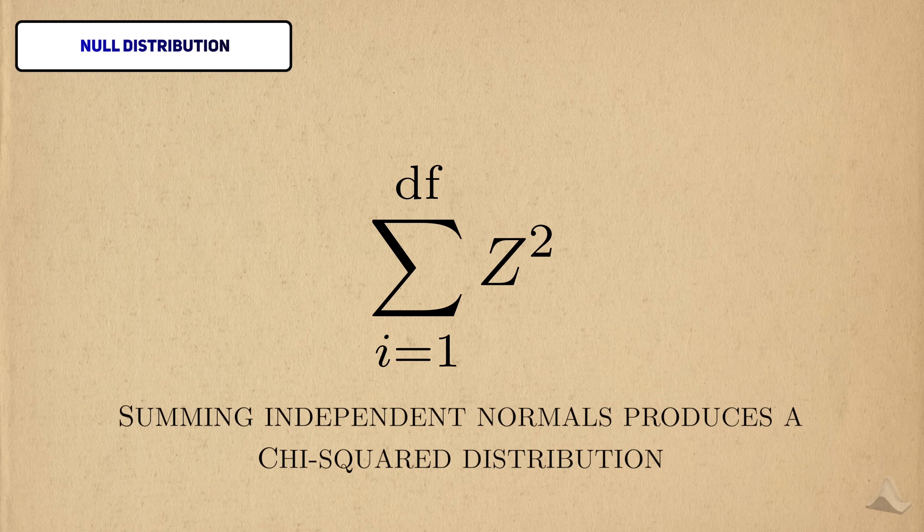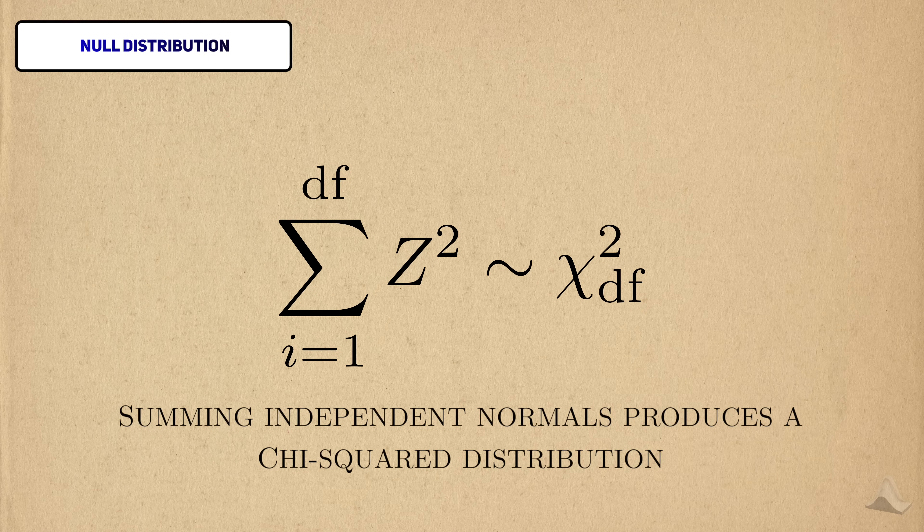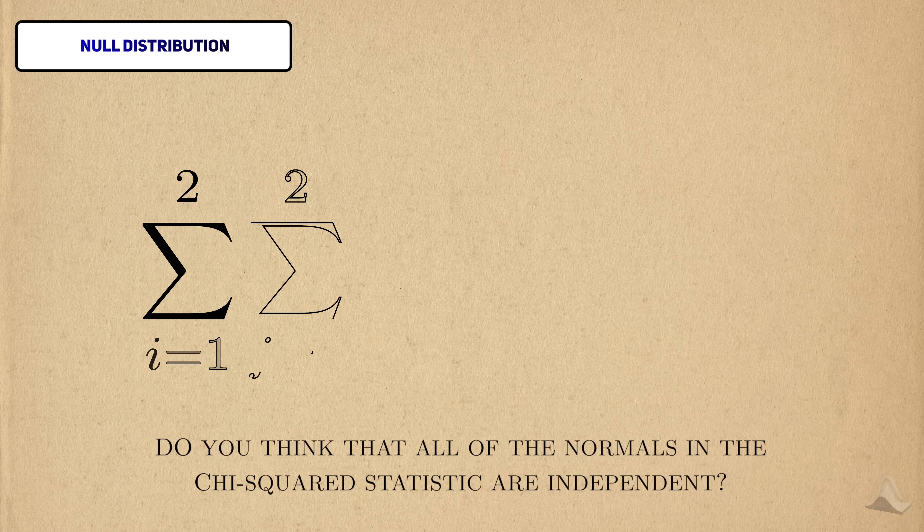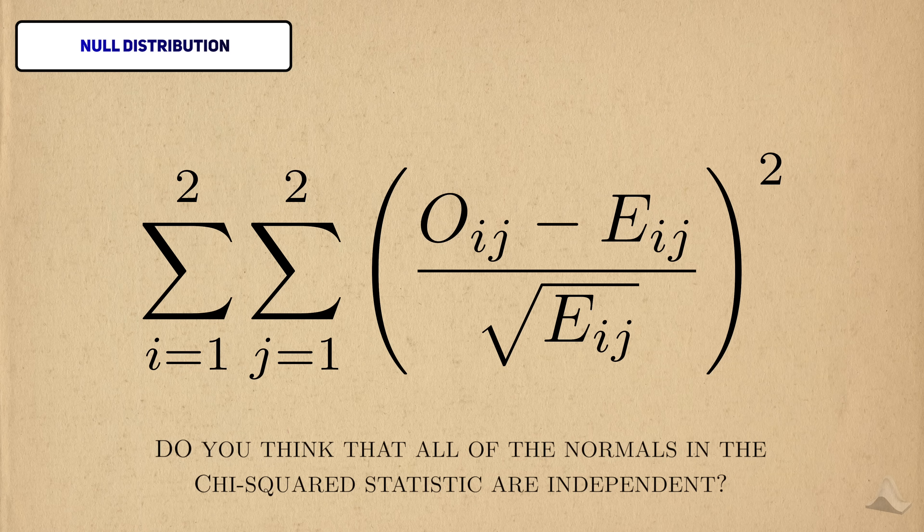When we sum multiple independent standard normals together, we still get a chi-squared distribution, but the degrees of freedom is related to the number of normals that we sum up. This independence matters a lot, especially since the data comes from a contingency table. Would you think that all of the standard normals from the chi-squared test statistic are independent?